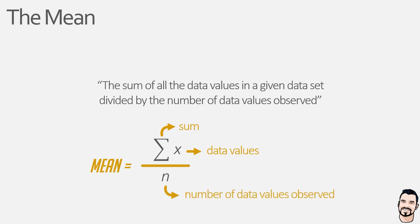Now some people might ask how many data values do I need to calculate the mean, or what is the bare minimum? On a technical level you need two data values in order to get a mean. However, this is considered bad practice in science, and so you will typically hear three or even five data values being considered the bare minimum. That being said, the more data values you record, the more accurate your analysis will be.